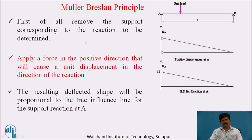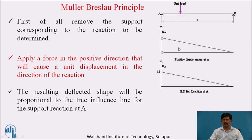Using Müller-Breslau's principle: to find reaction RA, remove that support and give a positive unit displacement in the direction of that reaction. I have removed the support and given a displacement of 1 unit to RA. The deflected shape of the beam is the influence line diagram for that function. Similarly, to find the ILD for RB, remove that reaction support, give a unit displacement to B, and the deflected shape gives the ILD for RB.